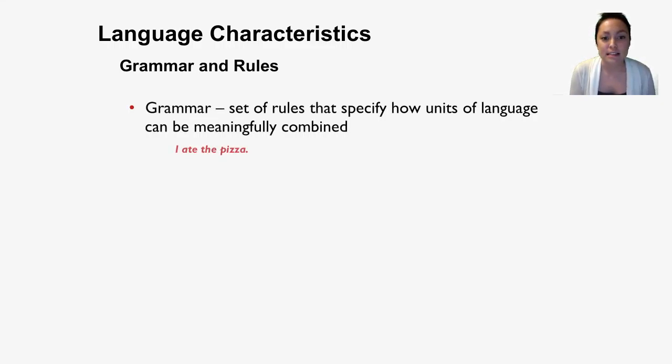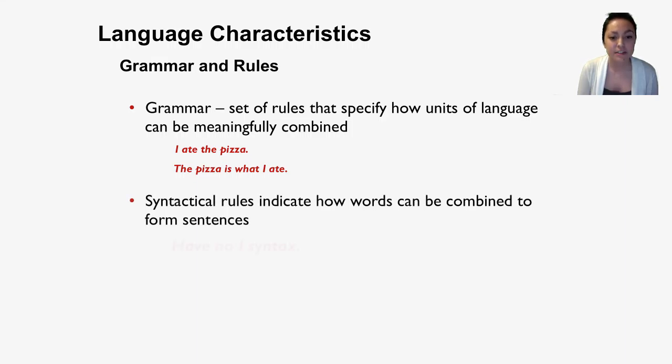And as I've said before, grammar is the set of rules that govern how a language can be conveyed. So we have these two sentences: I ate the pizza. The pizza is what I ate. Those are both pretty much the same sentence. They're worded a little bit differently, but they both follow the rules of grammar in the English language. We also have syntactical rules which indicate how these words can be combined to form sentences. So the first sentence, have no I syntax. That does not follow the syntactical rules of the English language. However, the second sentence does.